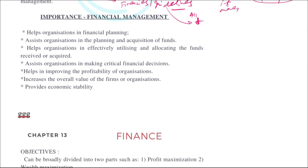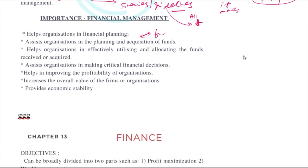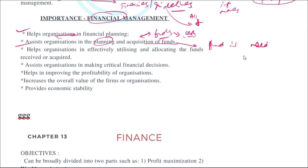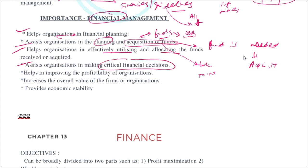The importance of financial management: it helps with organizational financial planning and assists in the acquisition of funds. Once you have a financial plan, you know how much fund is actually needed. If you don't have it, you acquire funds — like taking a loan from a bank or from the market. It also helps in effectively utilizing and allocating funds and in making critical financial decisions.